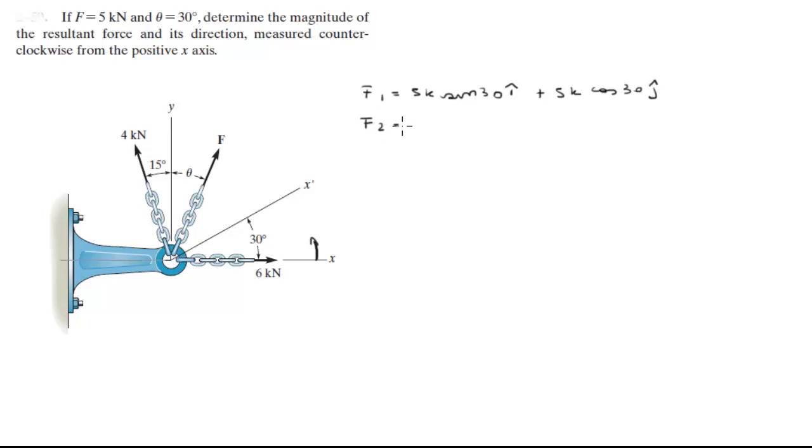And F3 equals negative 4k sin of 15 degrees in the i-direction plus 4k cos of 15 degrees in the j-direction.